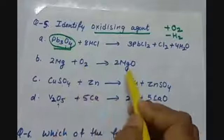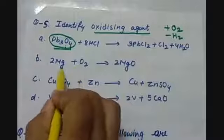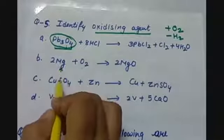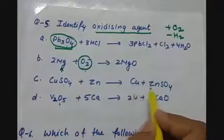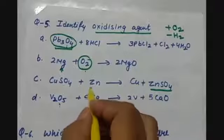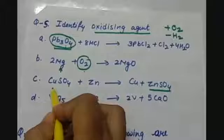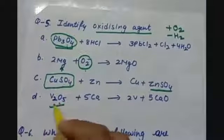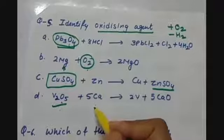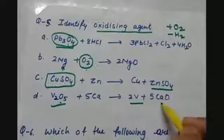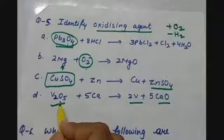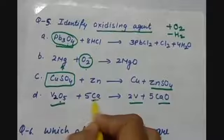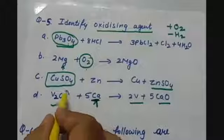Next, MgO2 forming MgO: Mg is getting oxygen attached to it, so Mg is getting oxidized, but O2 is helping, so O2 is the oxidizing agent. Then copper sulfate and zinc form copper and zinc sulfate — copper sulfate is the oxidizing agent. Next, V2O5 reacts with calcium forming vanadium and calcium oxide. Removal of oxygen is done from V2O5, so it is getting reduced, but it is behaving as an oxidizing agent because it is providing oxygen which gets attached to calcium, which gets oxidized. So V2O5 is our oxidizing agent.